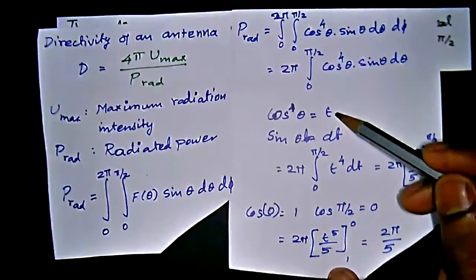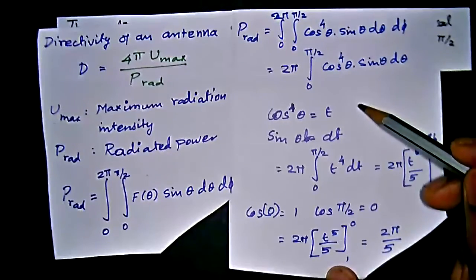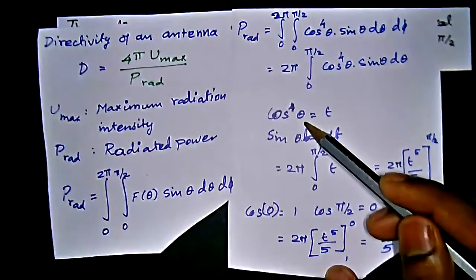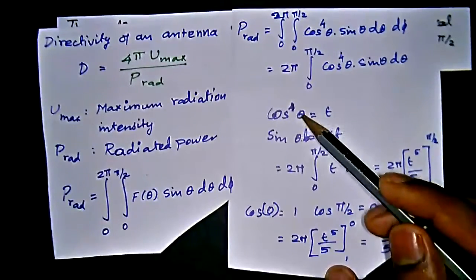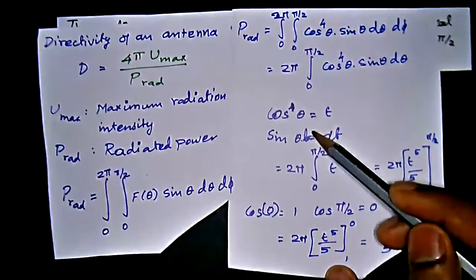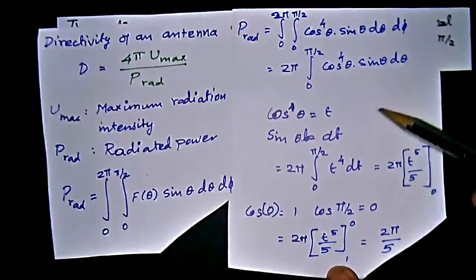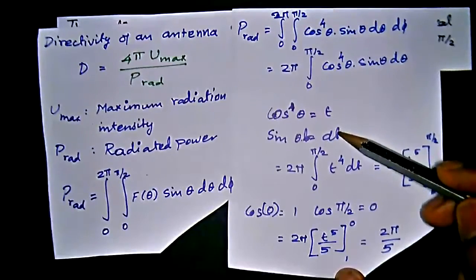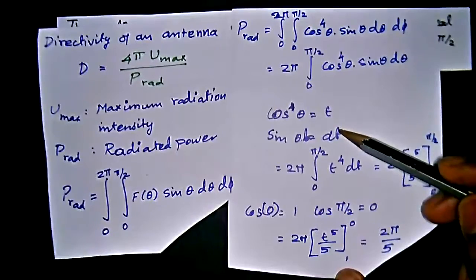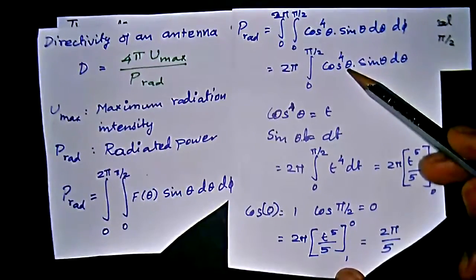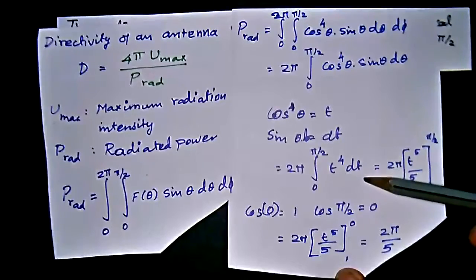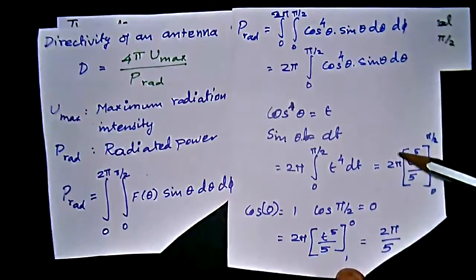We differentiate cos θ = t to find dt. Differentiating gives −sinθ dθ = dt, so sinθ dθ = −dt. Substituting into the integral, cos⁴θ·sinθ dθ becomes t⁴ dt. This can be integrated directly as t⁵/5.